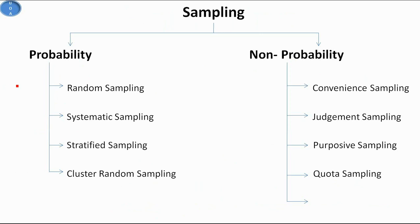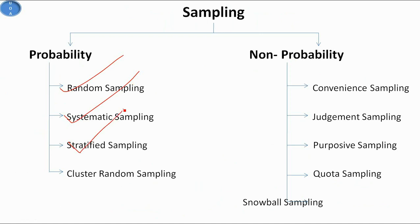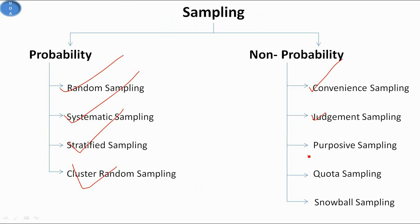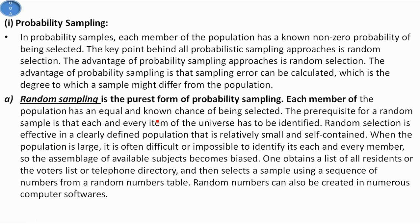In probability sampling we have: random sampling, systematic sampling, stratified sampling, and cluster sampling. In non-probability sampling we have: convenience sampling, judgment sampling, purposive sampling, quota sampling, and snowball sampling. Now we will see each of them one by one.